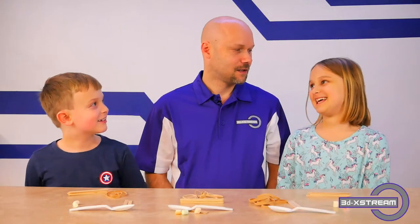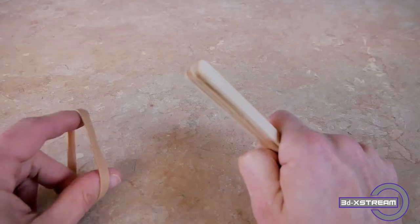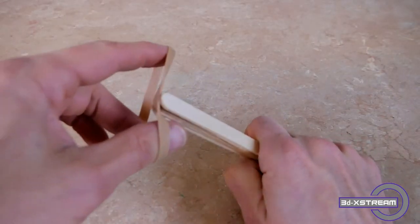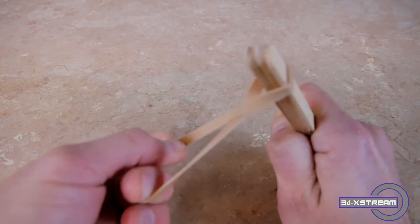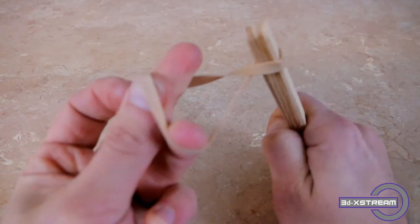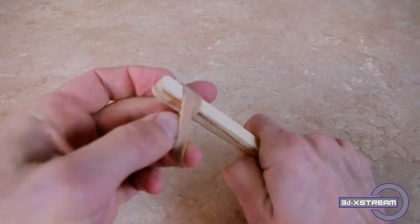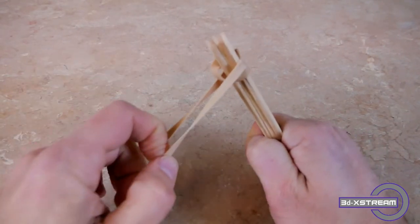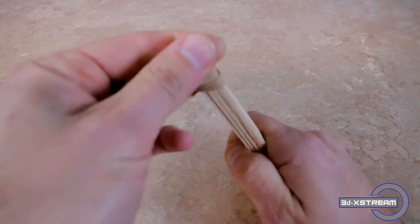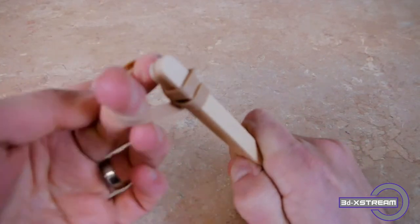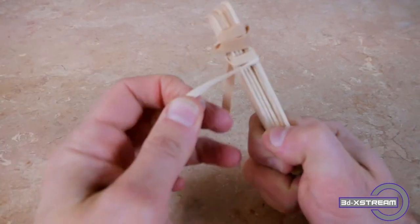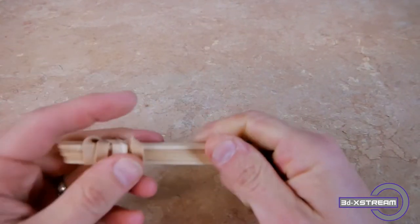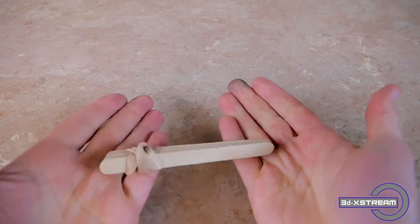Now we need to fasten them together. To do that, we're going to use two rubber bands, one on each end. Take a rubber band and loop it on one end. Twist and then come around the stack with the open end. It doesn't have to be pretty or neat, you just want it to hold. Keep doing this, holding the stack steady and looping the rubber band until it's firm.